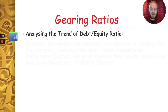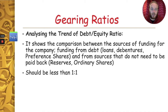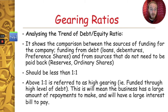So what does this actually mean? This shows the comparison between the sources of funding for the company — funding from debt (loans, debentures, preference shares) versus funding from sources that do not need to be paid back, which are reserves and ordinary shares. The ratio should be less than 1 to 1. In this case our answer is 0.8 to 1, so that is good. In the case of our example, for every euro of equity capital funding the business, 80 cent was funded through debt capital.